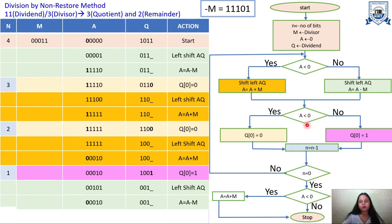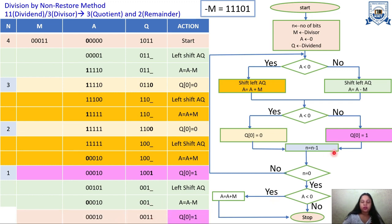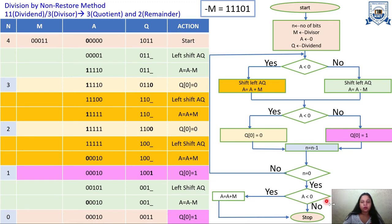We check if A is less than zero. The MSB is 0, so A is greater than or equal to 0. We move to that branch and place 1 at position Q0. N is then decremented: N = 1 − 1 = 0. Now N equals zero, so we proceed to read the final result.